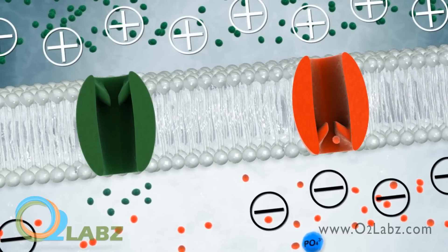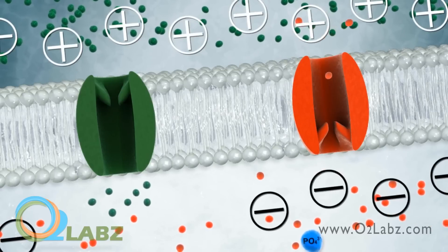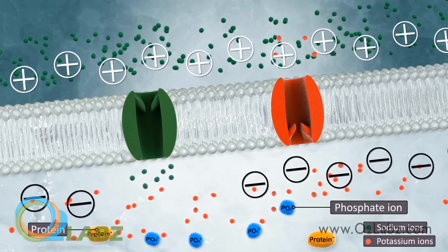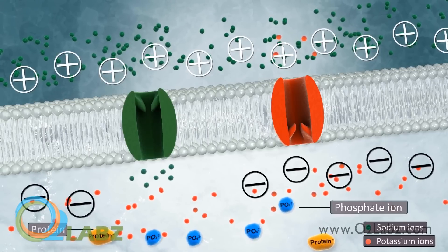Ion channels, tube-shaped proteins across the membrane, allow specific ions to move through the membrane. The direction of ion flow through a channel depends on the difference in concentration of electrical charge acting on the ion.